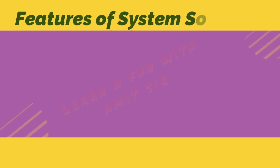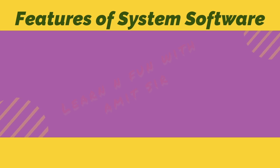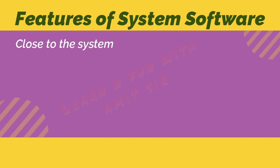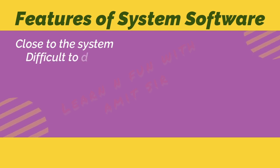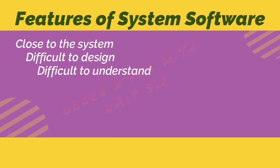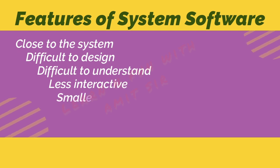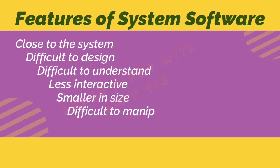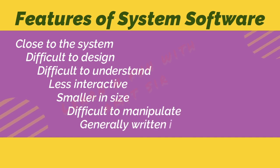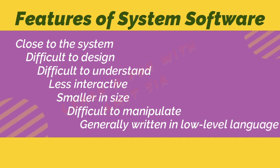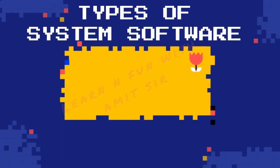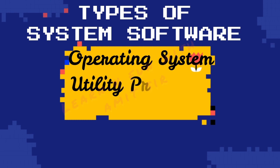Now let's talk about some features of system software. They are close to the system — in other words, they directly interact with the hardware. They are difficult to design and difficult to understand as they are written in very low-level language, so designing and understanding the codes are not easy to manipulate. The main types of system software are operating system, utility programs, and drivers.